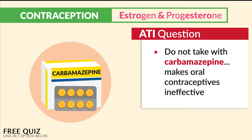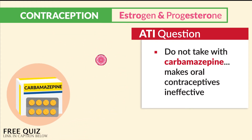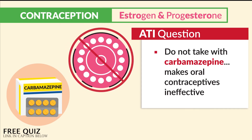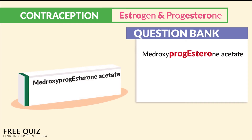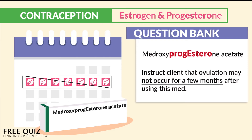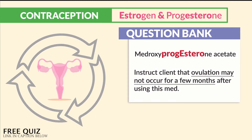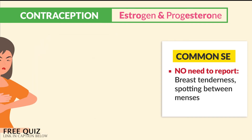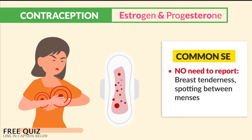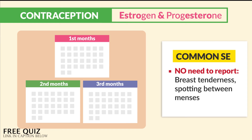ATI mentioned something very interesting: we do not take estrogen with carbamazepine, which is an anticonvulsant, because it makes oral contraceptives ineffective. Another question bank mentioned that with medroxyprogesterone acetate, we instruct clients that ovulation may not occur for a few months while using this medication, since it interacts with ovulation and can disrupt regular cycles. A common side effect not heavily covered on question banks is breast tenderness or spotting between cycles — this usually improves within three months when first starting the medication.